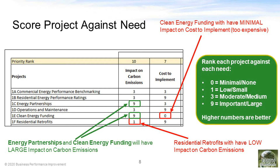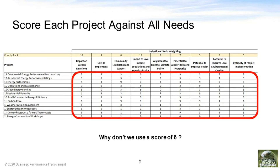In this example, the team has determined nines for the two categories of energy partnerships and clean energy funding under the column of impact on carbon emissions — meaning those two projects will have a big impact on reducing carbon emissions. Alternatively, they did not think that residential retrofits would have a big impact on carbon emissions, so they gave it only a one. On the next column, they also felt that clean energy funding would have very minimal impact on the cost to implement category. What this means is that a zero is bad — the cost to implement would be very large, bringing it down on the list of importance. This category could be renamed to something like return on investment or low cost to implement. For each project listed you must go through and score it either zero, one, three, or nine on each of the stakeholder needs.